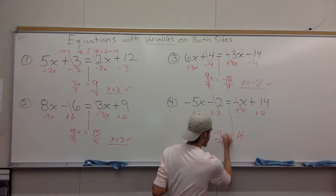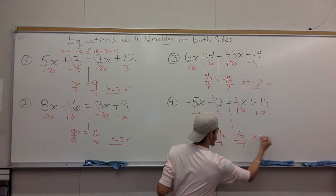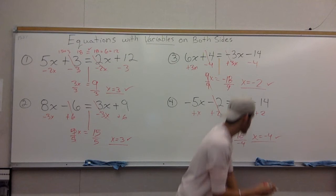You have negative 4x equals 16. Divide by negative 4 on both sides. 16 divided by negative 4 would give you the final answer, x equals negative 4. And there it is. The final answer.